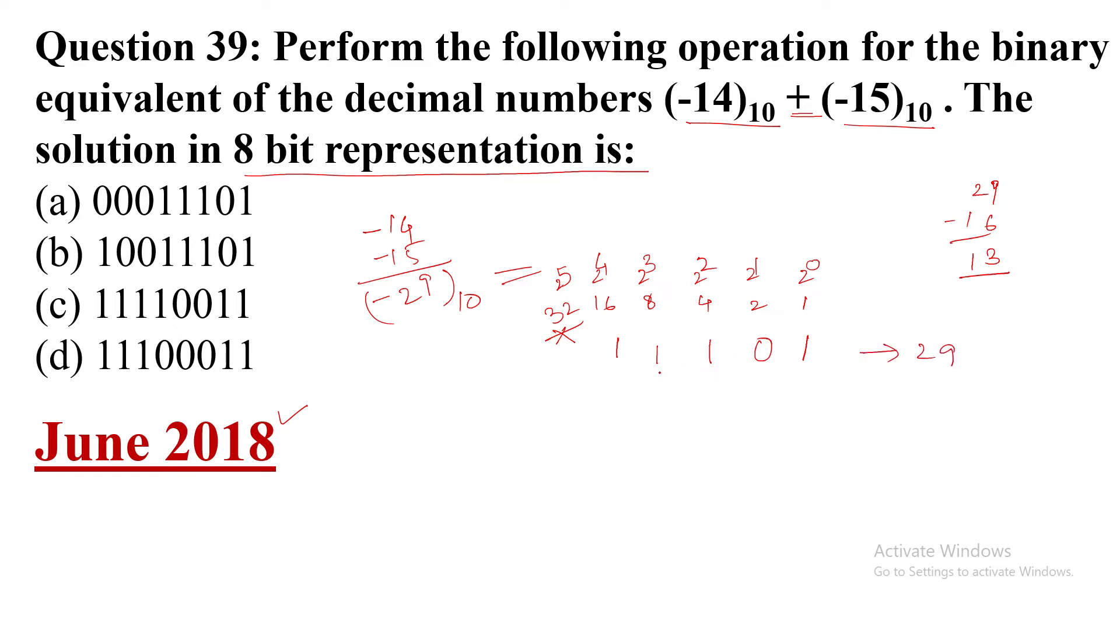So now for 8 bits, this is 4 bits, so we need 3 more bits plus one for the sign bit: 00011101. The sign bit is 0 because this is plus 29.